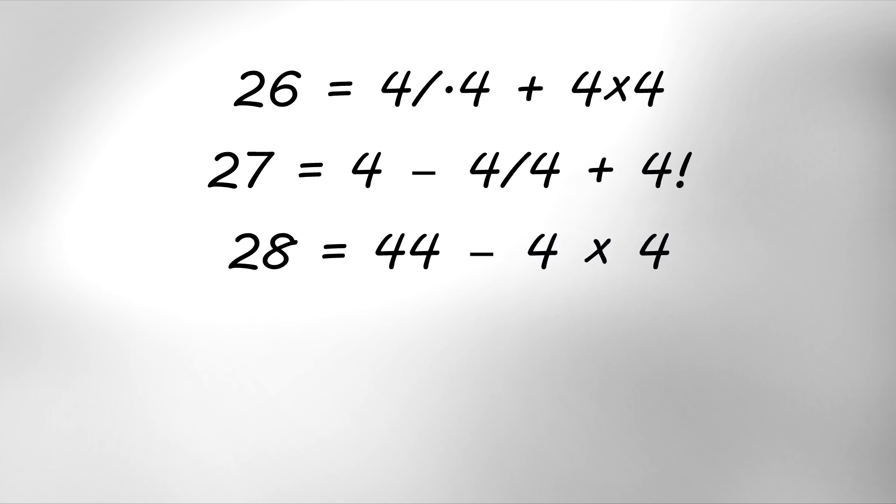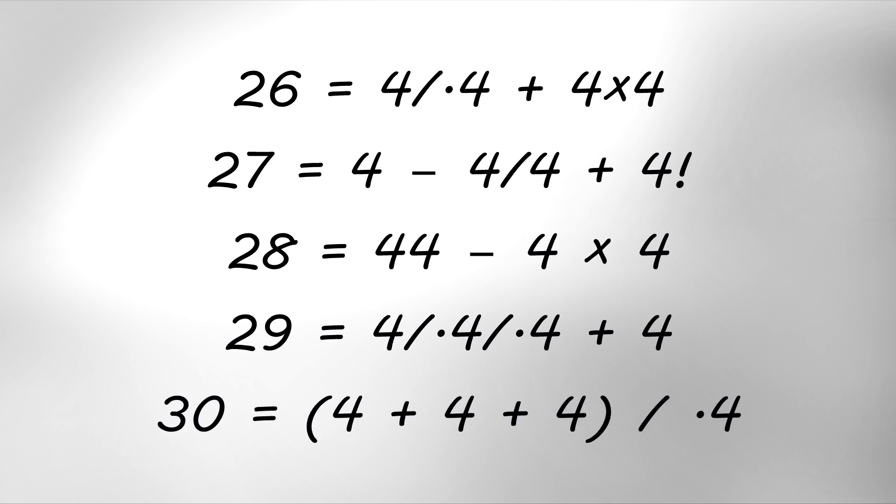28 equals 44 minus 4 times 4. 29 equals 4 divided by 0.4, divided by 0.4, plus 4. 30 equals 4 plus 4, plus 4 over 0.4.